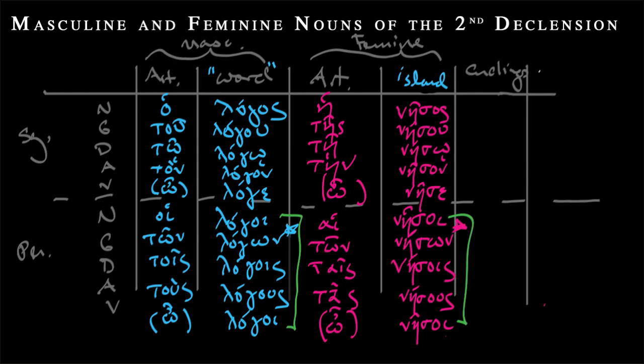So let's look at our endings. I say endings but really we only have one type here. We're going to have omicron sigma, omicron upsilon, omega with a subscript iota, omicron nu, and then epsilon. Then oi, on, ois, ous, and then just because it's equal, oi.